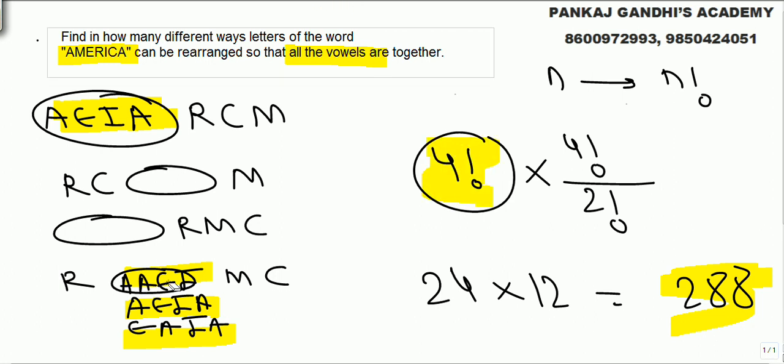But internally, 4 vowels at 4 places can be arranged in 4 factorial ways. We need to divide by 2 factorial for 2 A's. So the answer we get here is 288 different arrangements.